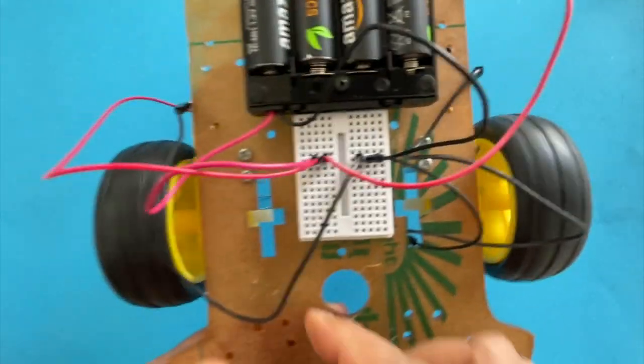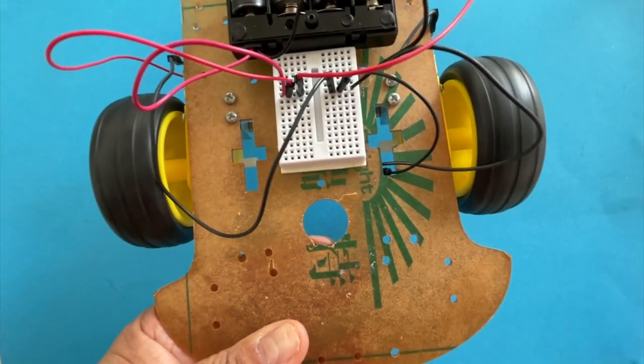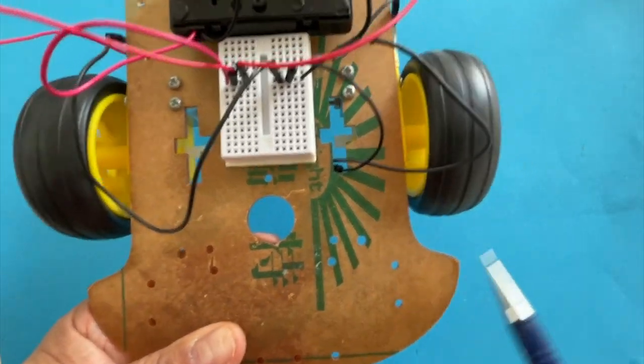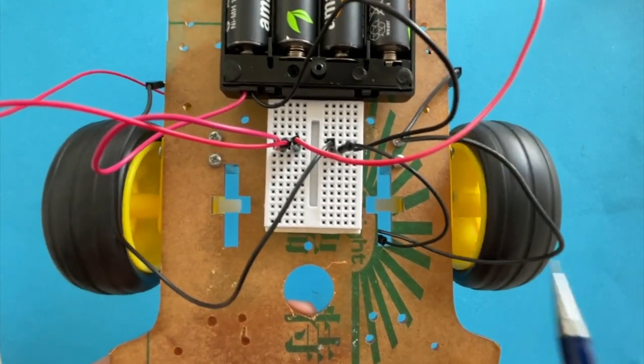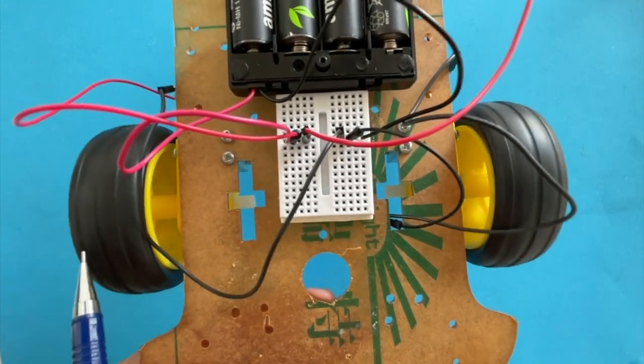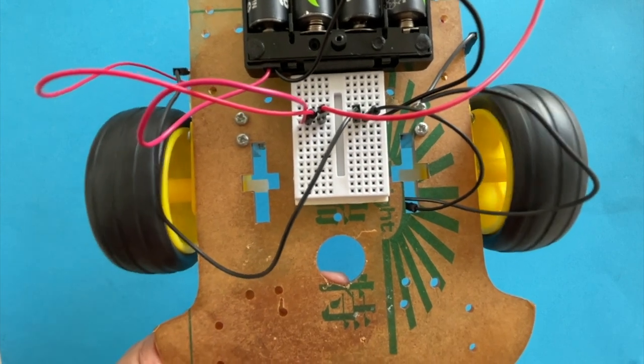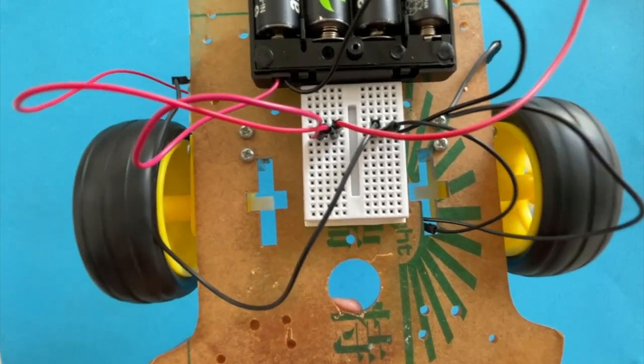Both the motors start rotating. This car will not go straight because one motor is rotating faster than the other. For the toy car to go straight, both motors must run at the same speed or same RPM, rotations per minute.